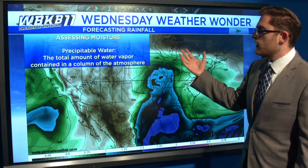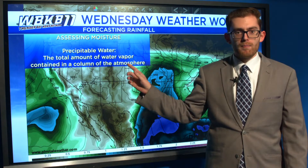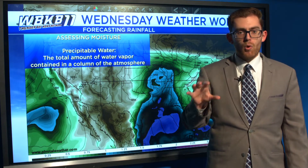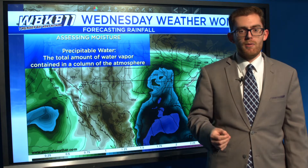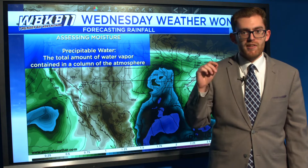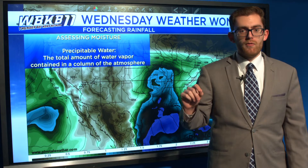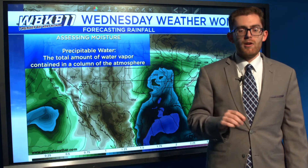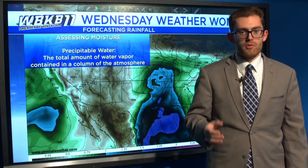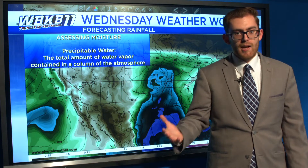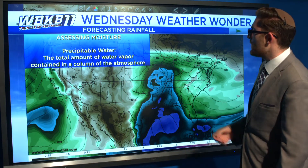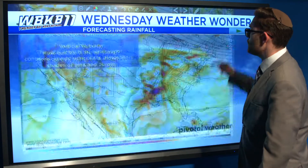A high dew point means that there's more moisture. Another example of assessing moisture is a value called precipitable water. It's a measure of how much total water content there is in a column of the atmosphere above your head — if all of that water vapor were to instantly rain down, that's how much water would result. It's just a way of gauging how much moisture there is.